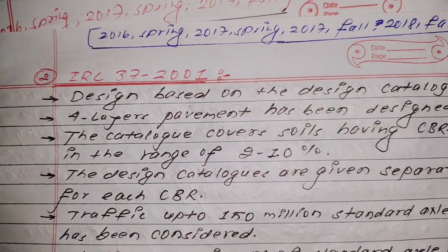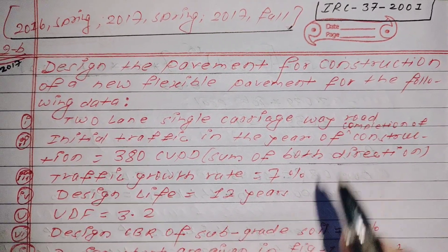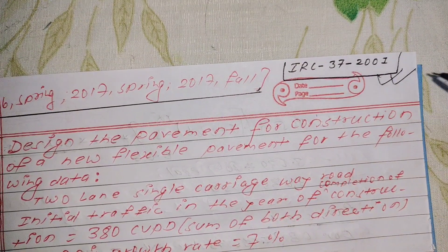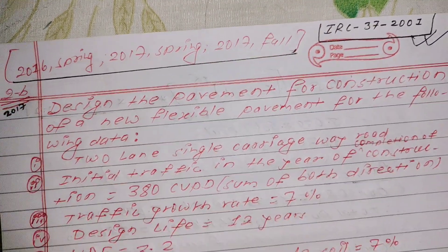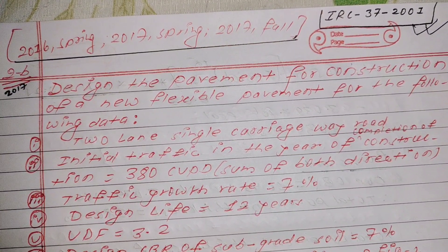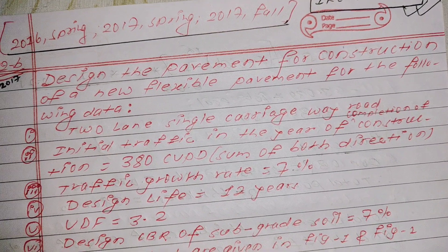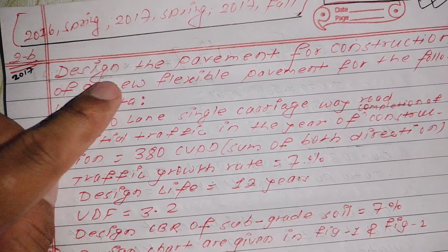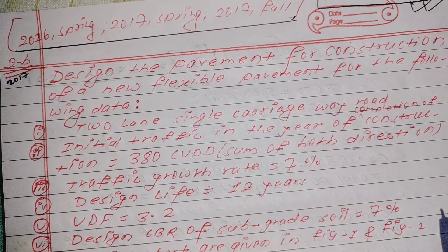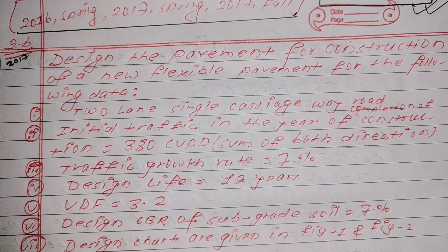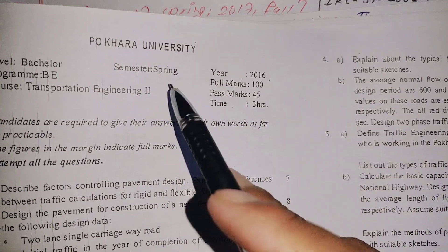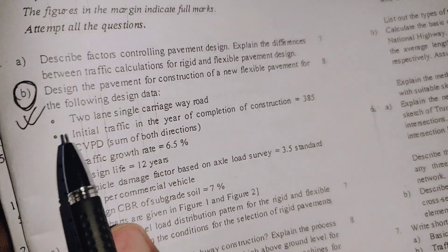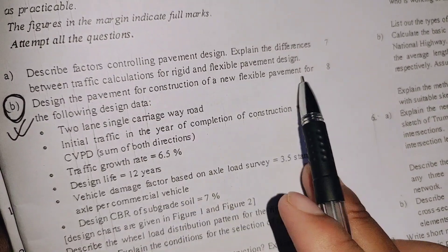Now let's look at an old exam question from IRC 37-2001. This is a question from 2016: Design the pavement for the construction of a new flexible pavement.